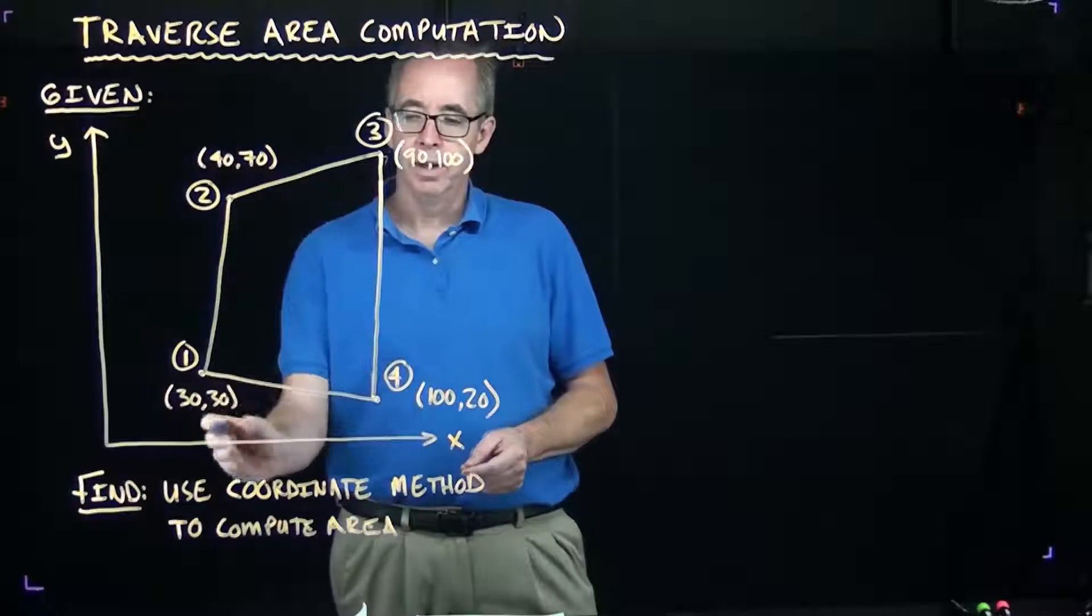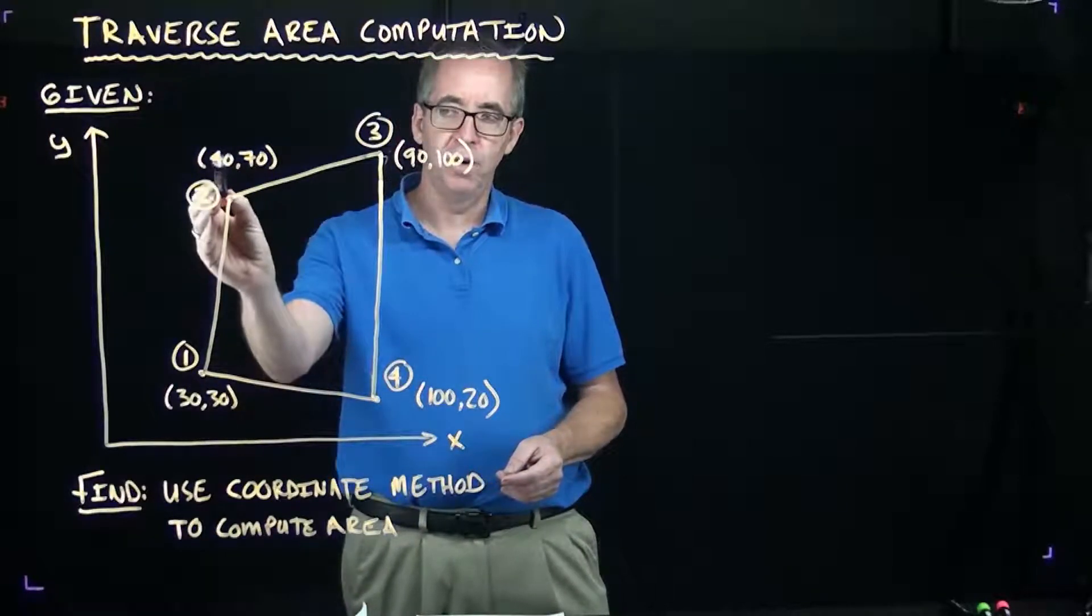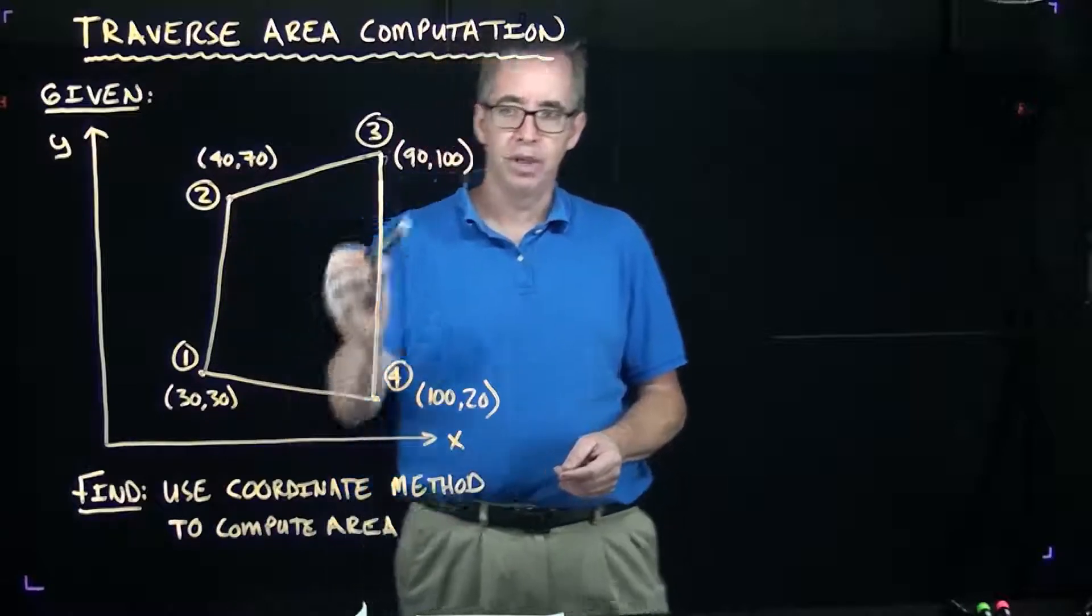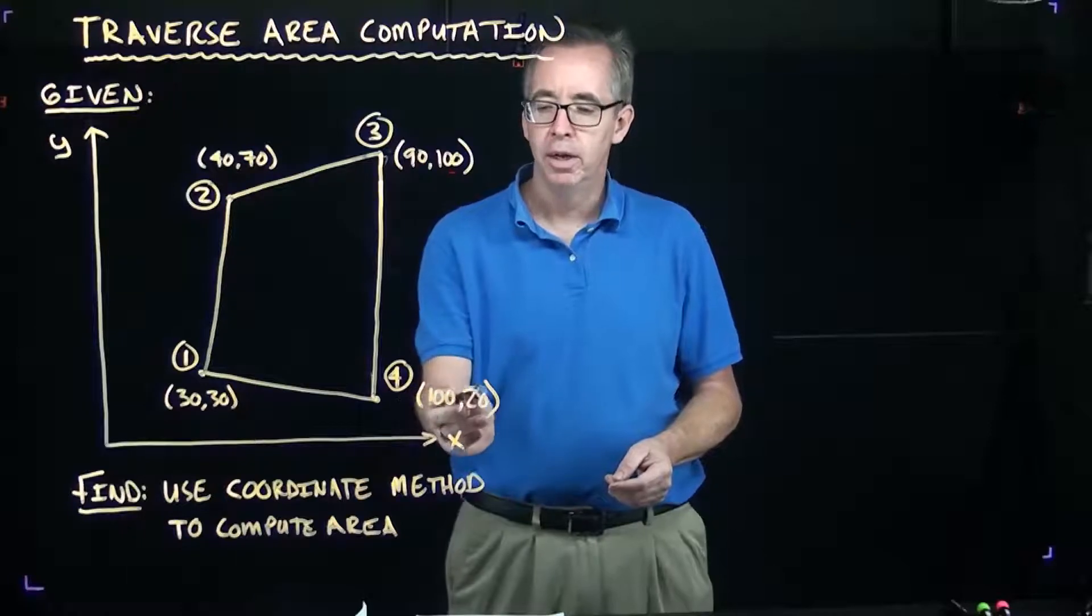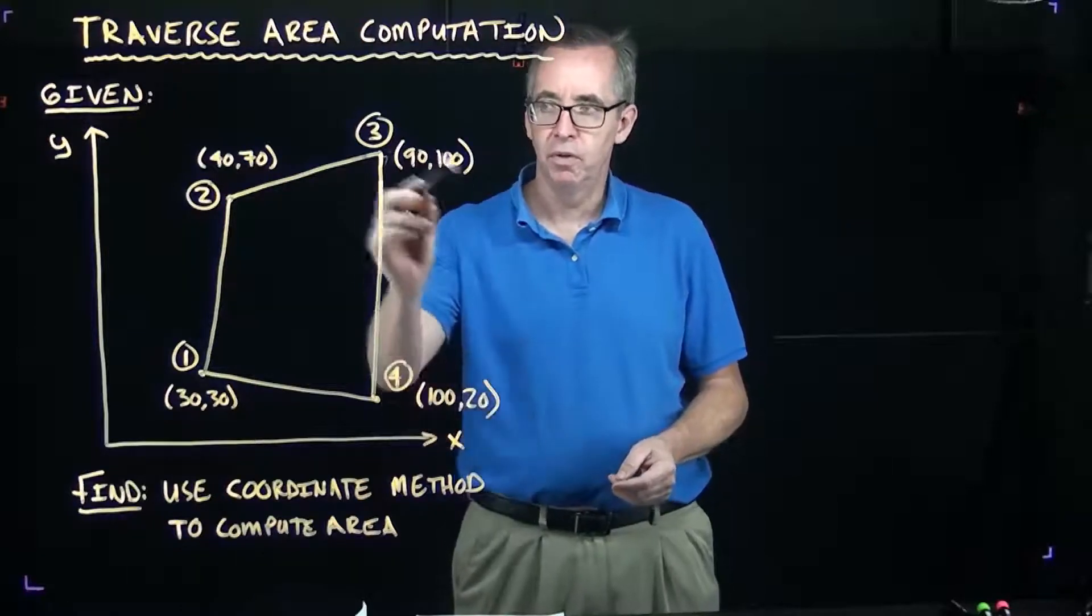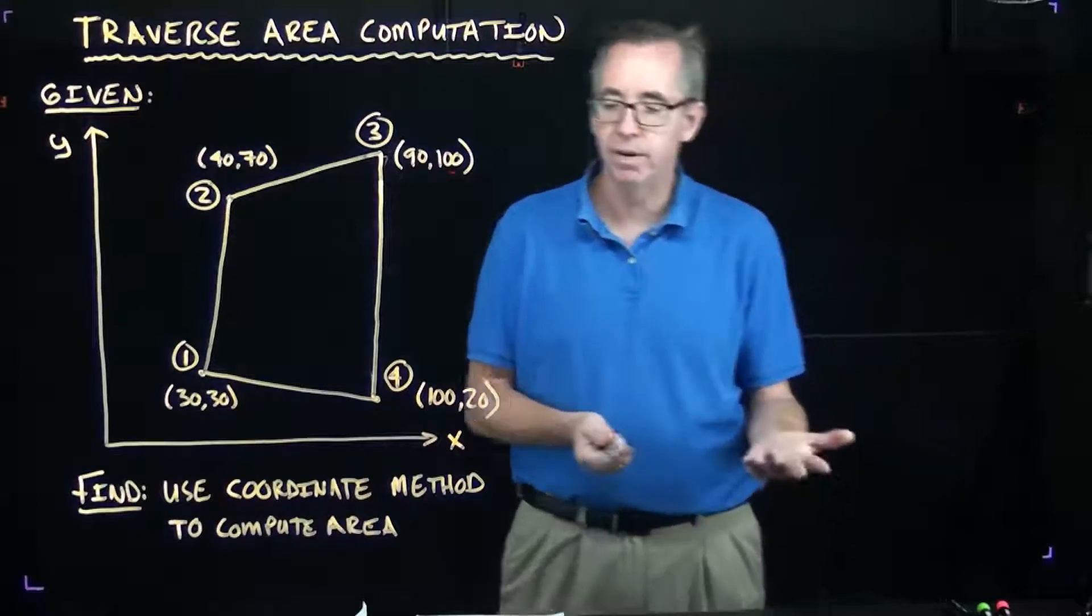You can see at point one, the coordinate is 30 feet, 30 feet. At point two, it's 40 feet, 70 feet. Point three, it's 90, 100. And then at point four, we have 100 foot and 20. Those are all X and Y coordinates, or they could be Eastings and Northings.